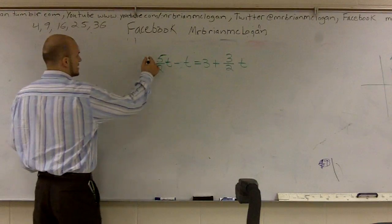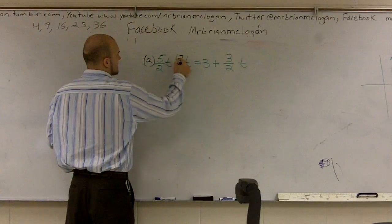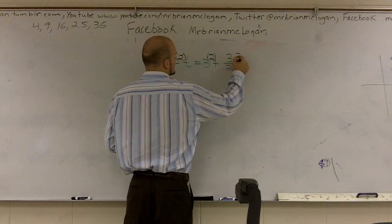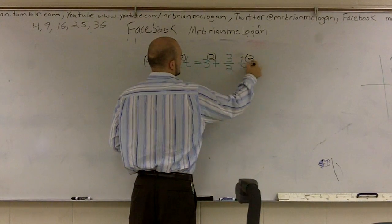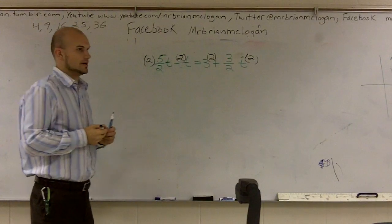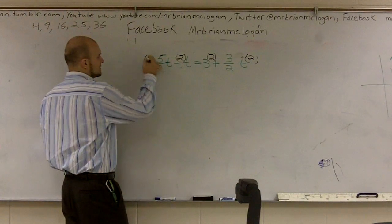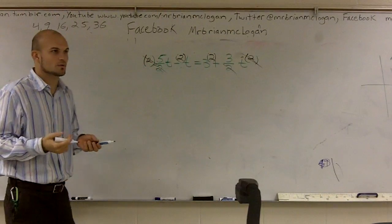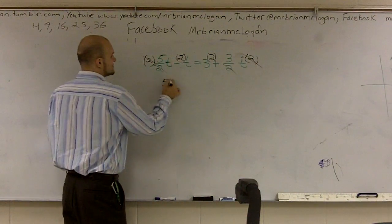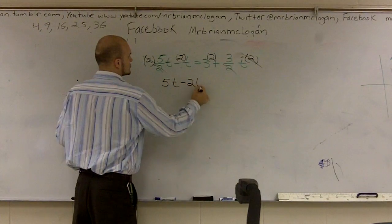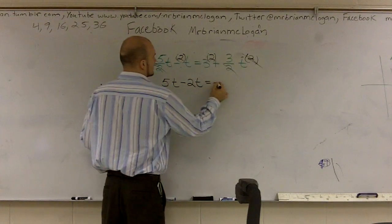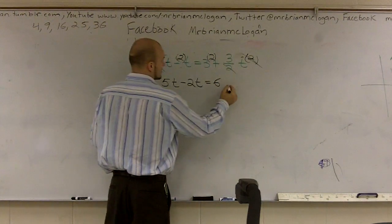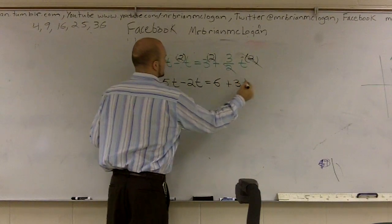So I'm going to multiply this by 2, this by 2, this by 2, and this number by 2. Therefore, these cancel out and those two cancel out because 2 divided by 2 gives you 1. Therefore, I'm left with 5t minus 2t equals 6 plus 3t.